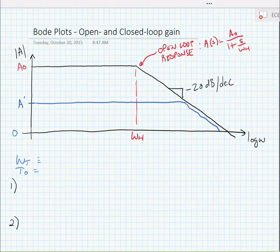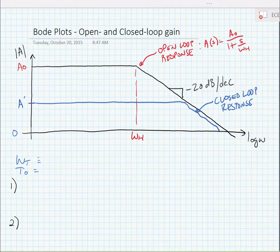This is called the closed loop response. Now, note with the closed loop response that there is a new closed loop high frequency pole, omega h prime, that's higher than the high frequency pole of the op-amp by itself.